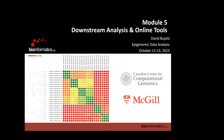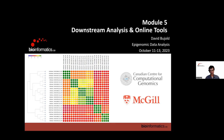Welcome to this last module of the workshop labeled 'Downstream Analysis and Online Tools.' A lot of what I do in my work is to organize data and make data reusable by others. You may have heard of the FAIR principles for datasets — how to make genomic and epigenomic data findable, accessible, interoperable, and reusable.